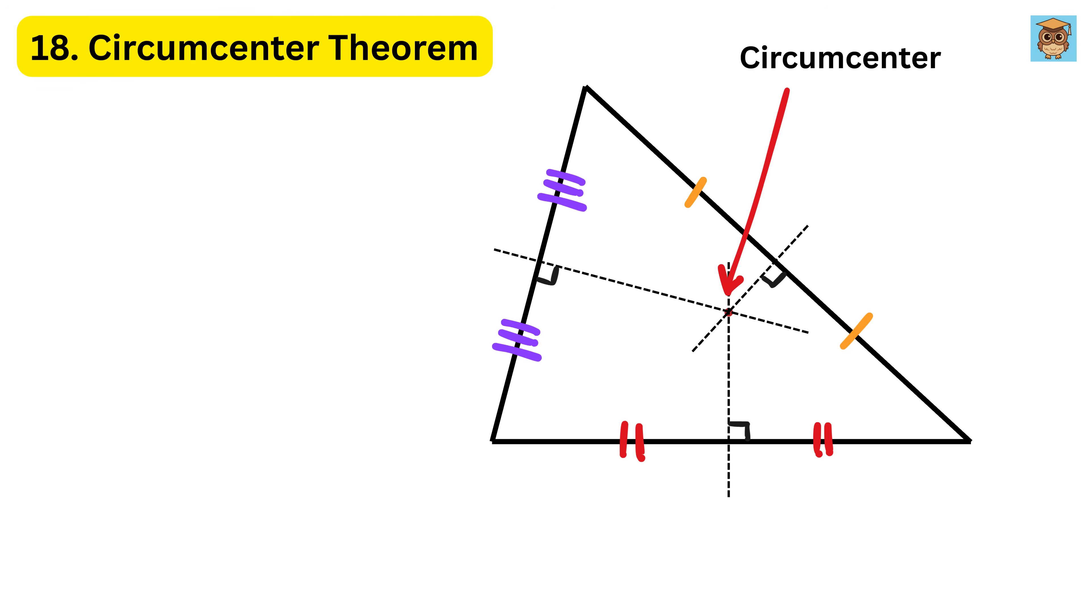This circumcenter is special because it is the center of a circle that passes through all three corners of the triangle. This circle, called the circumcircle, perfectly wraps around the triangle, touching each vertex. No matter the shape of the triangle, its circumcenter always exists, and it can be inside, outside, or on the triangle, depending on the type of triangle.